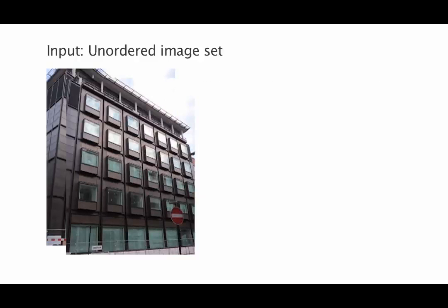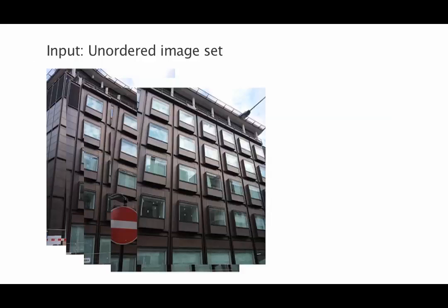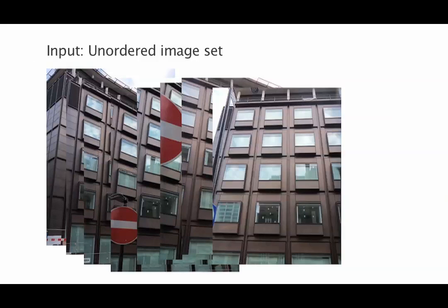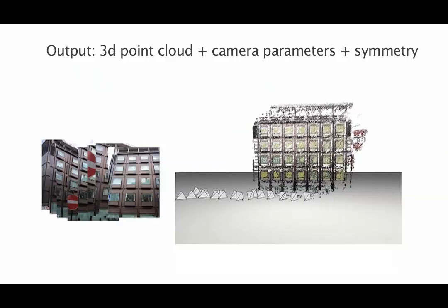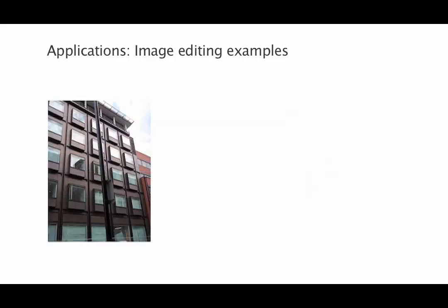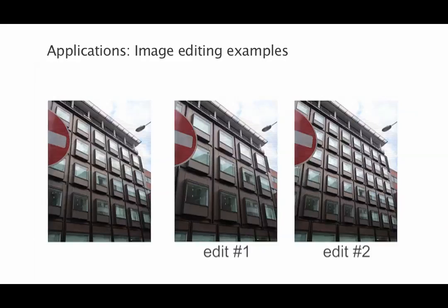Repetitions are commonplace in urban facades. Ambiguities arising from such widespread repetitions make it difficult to establish consistent correspondences across unorganised image collections. We present a simultaneous symmetry detection and structure-from-motion extraction framework for image-based facade modelling. The extracted information enables users to perform various image editing operations across multiple images.